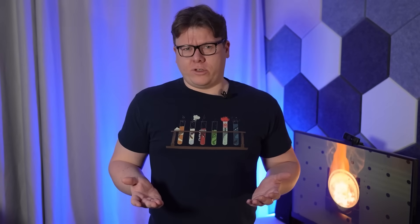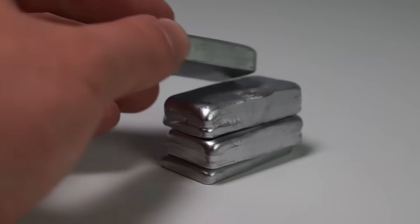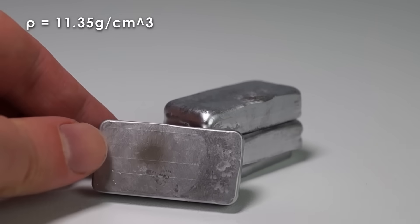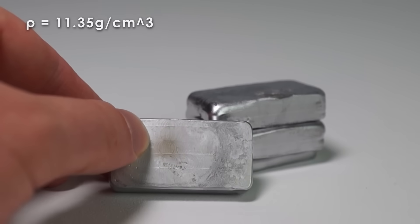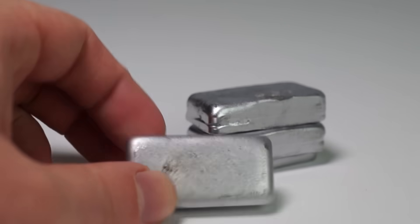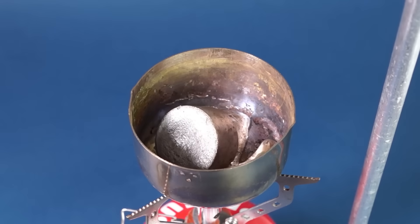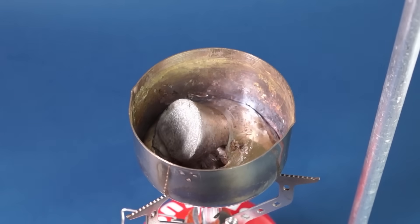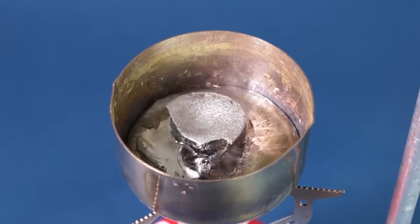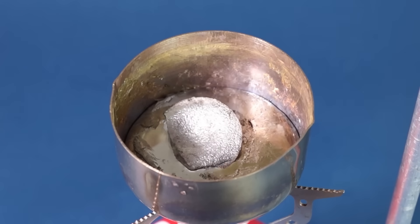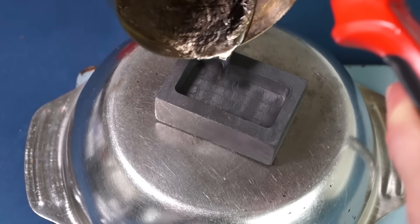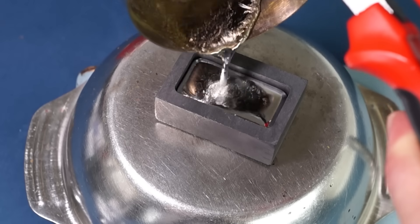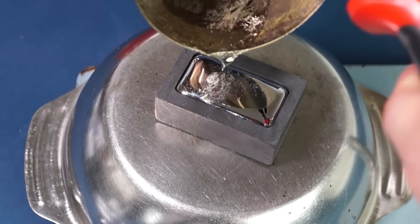You can only melt platinum with an oxygen torch, as its melting point is 1768 degrees Celsius. Interestingly, rhenium, which differs in density by just a gram per cubic centimeter, is already impossible to melt even with an oxygen torch, as its melting point is nearly 3200 degrees Celsius. Although, from a chemical standpoint, rhenium is already more active than platinum.